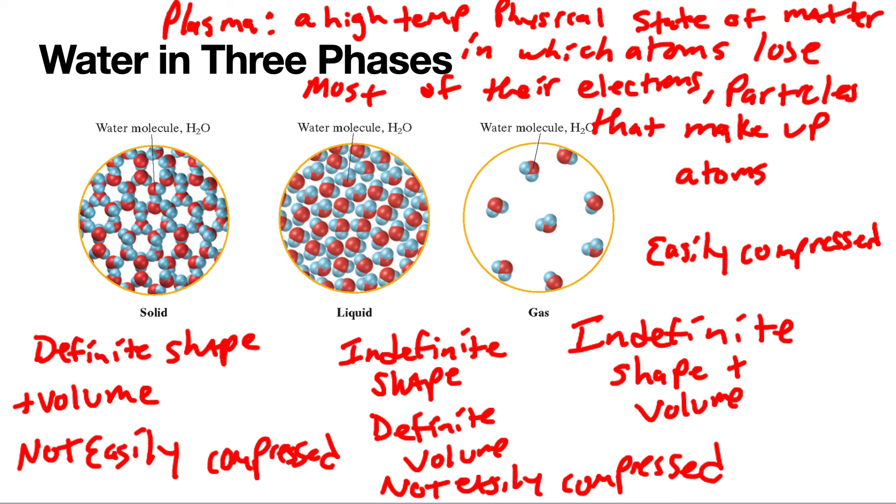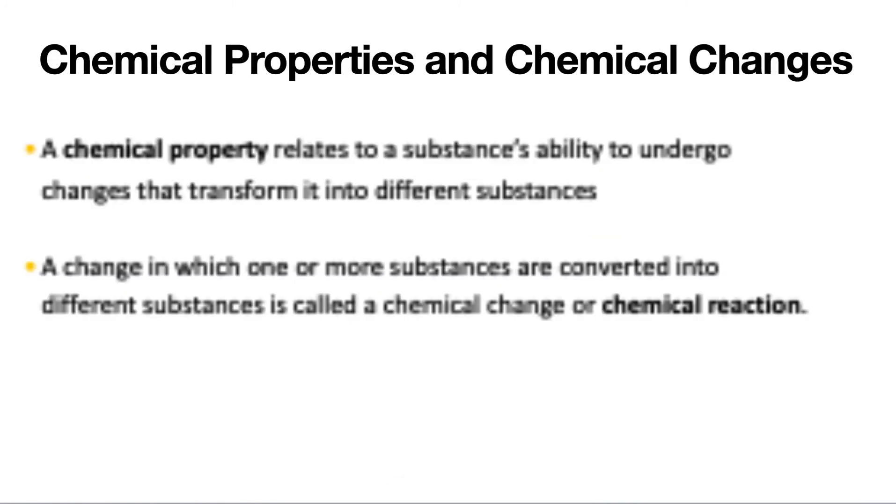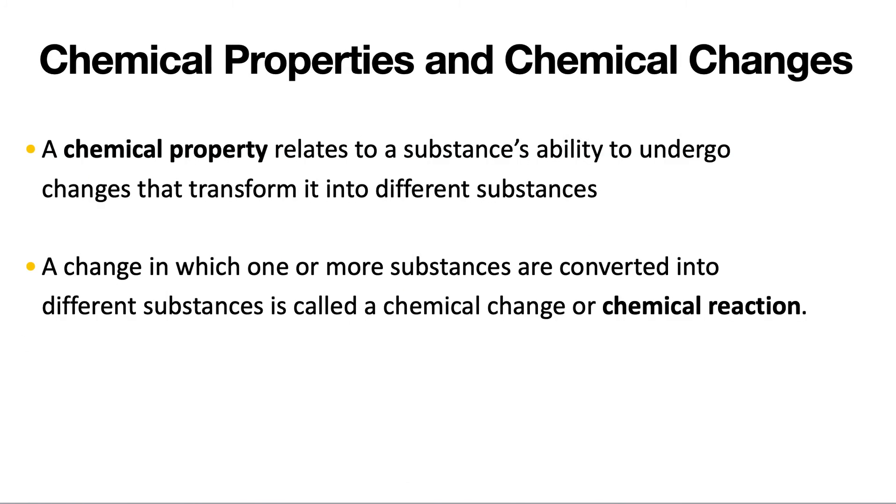Chemical properties and chemical changes. A chemical property relates to a substance's ability to undergo changes that transform it into different substances. A change in which one or more substances are converted into a different substance is called a chemical change or a chemical reaction.